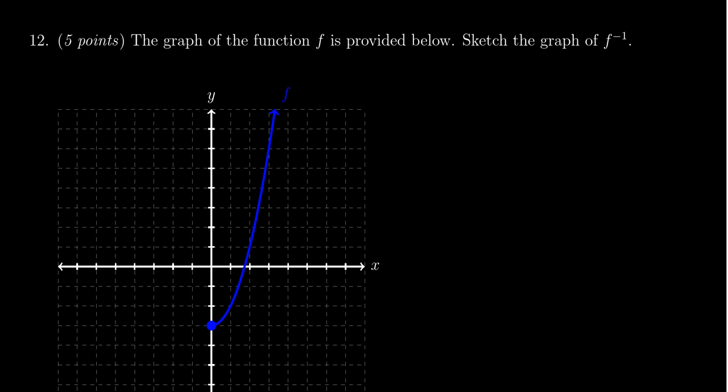Now, there's not a lot of work to be shown here, but just remember the basic principle. To calculate the inverse of a one-to-one graph, we have to reflect said graph across the diagonal line y equals x.